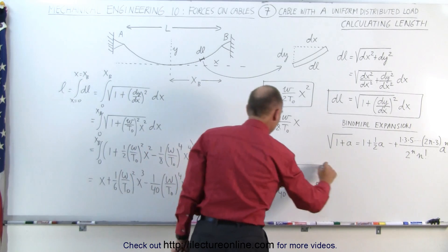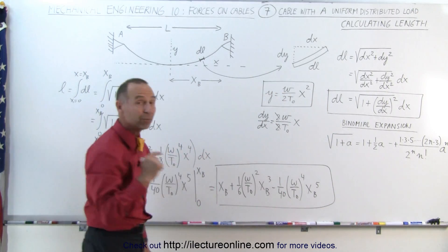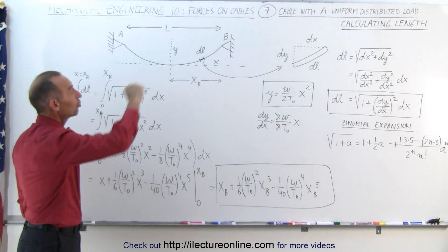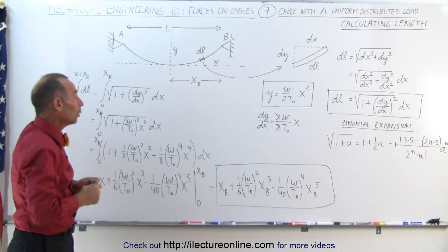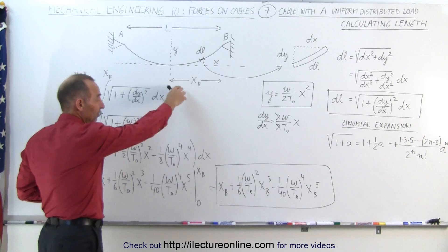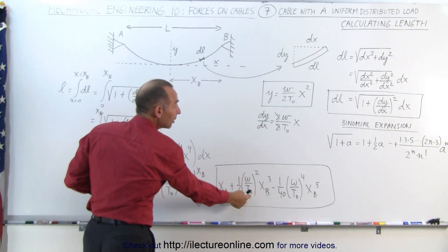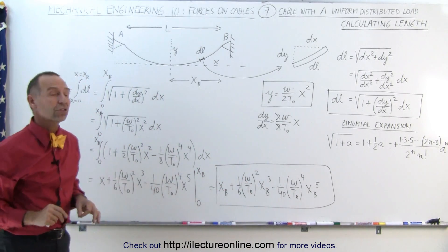And so this would be the length of the cable from the lowest point of the cable all the way up to support B on the right side. And that's how we calculate that. Now all we have to do is know what X sub B is equal to, what the weight per unit length is, and what the tension is in the horizontal direction.